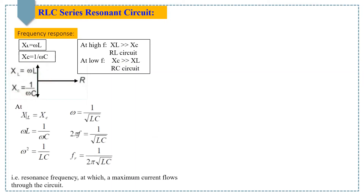When XL equals XC, setting omega times L equal to 1 over omega times C and replacing omega with 2 pi F, we get the resonance frequency F equals 1 over 2 pi times the square root of LC. This is the resonance frequency of the circuit at which we get maximum current flowing through the circuit.